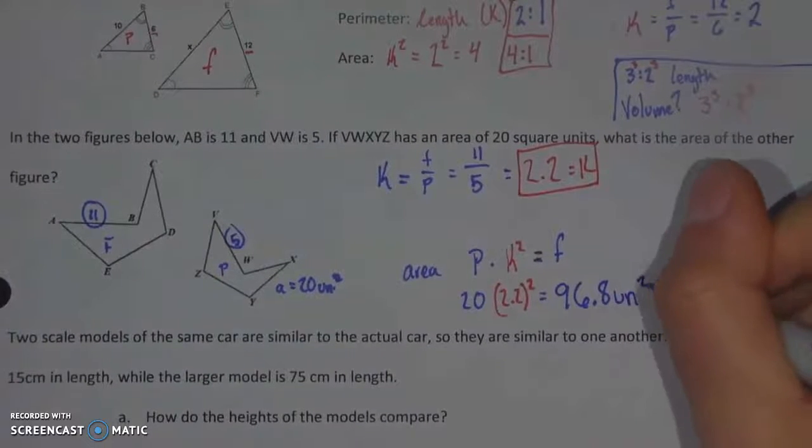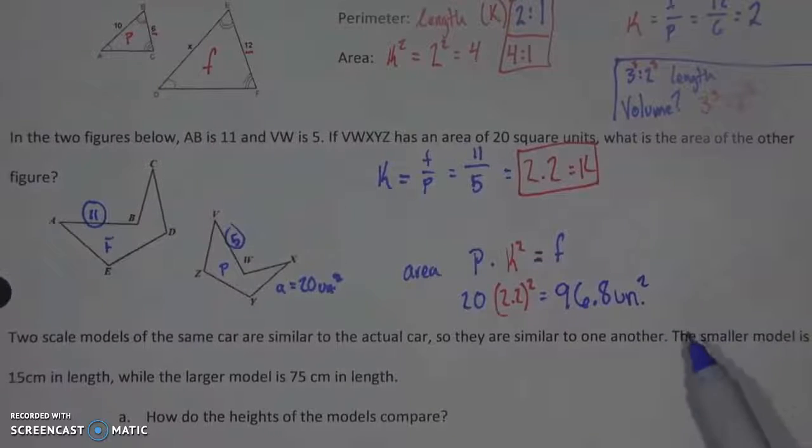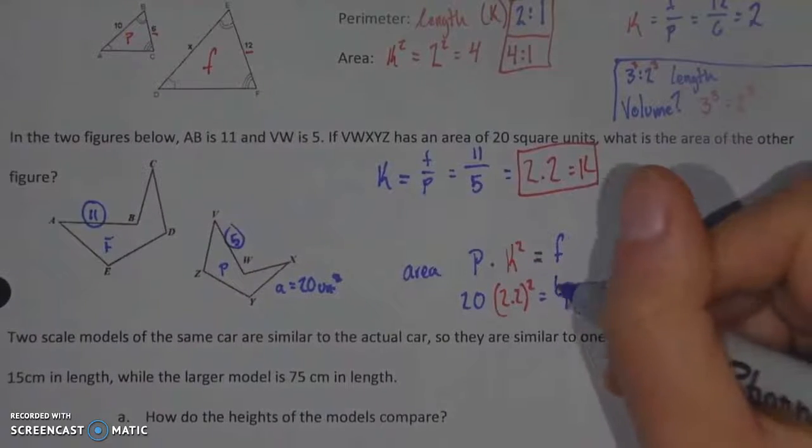So you can even test me on that, go ahead and try it out if you'd like, but this will end up giving you an answer of 96.8. So don't forget to square that k value and we don't know the units here but we can just say units squared because we are talking about area so of course it is going to be in square units.